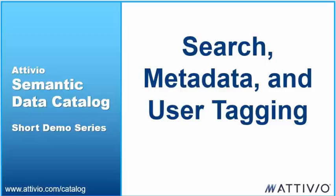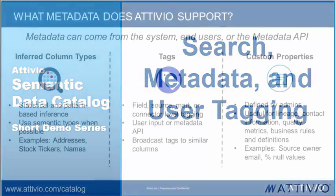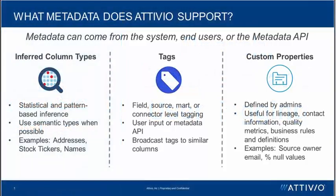In this video let's talk about an important piece of any good data catalog: metadata. Atibio has robust support and functionalities around metadata. In this video we have a couple of slides to talk about what metadata can be used in the catalog, what value and functionality it serves, and then also give you a brief demo of what using metadata looks like in the semantic data catalog.